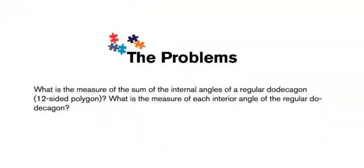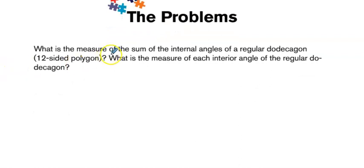For the next problem, they're asking us, what is the measure of the sum of the internal angles of a regular dodecagon? And we're getting the hint here that it has 12 sides. What is the measure of each interior angle of the regular dodecagon? So, the first question about the sum of the interior angles.